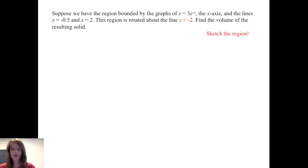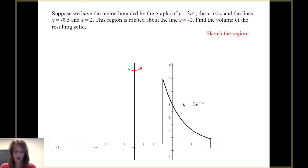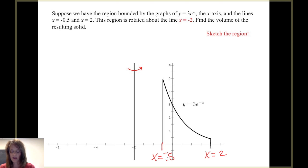The first step is always to sketch the region. Go ahead and pause the video and sketch the region — this is something you should be able to do by hand, though you can use a graphing calculator if that's helpful. So I've got my axis of revolution at x equals negative 2, the edge x equals negative one-half, the edge at x equals 2, and the curve y equals 3 times e to the negative x.